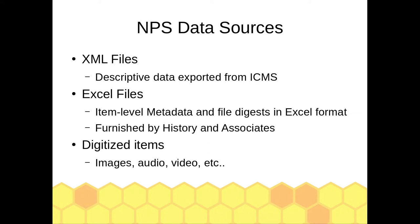Next I want to talk about the data we're using as source data. The driving problem for all of our software development is data that was handed to us by you. What we have are XML files — a copy of ICMS that's a snapshot of the data you had in the spring. We exported from that software some XML files; I think there are four of them, and they have data on collections all the way through items. We also have Excel files containing item-level metadata and file digests, created by History and Associates as they do scanning. And lastly, we have the items themselves — the digital form of the items: images, video, audio, and much more.